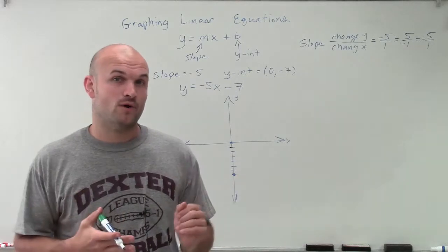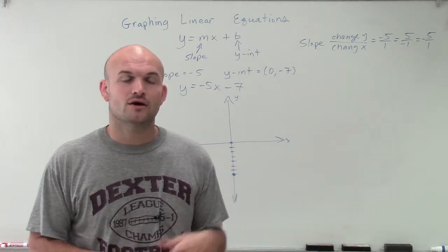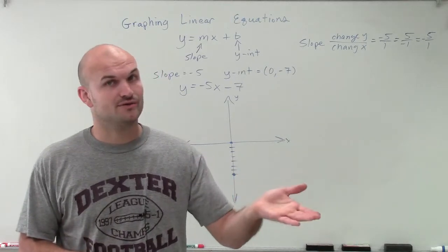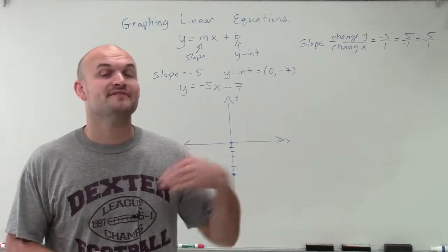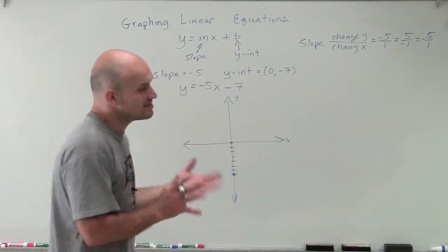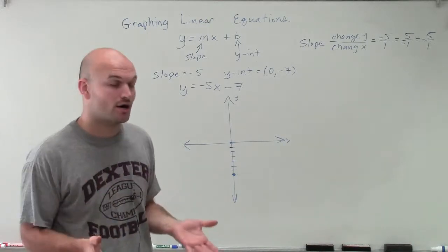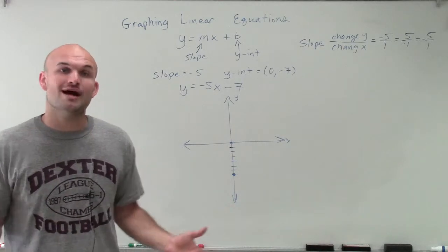So what I'm trying to tell you is think about it this way. If I have negative 5 divided by 1, that still equals negative 5. If I have 5 divided by negative 1, that equals negative 5, which is always the same case. So it doesn't matter if the negative sign is above or below. But that is going to affect our slope triangle.